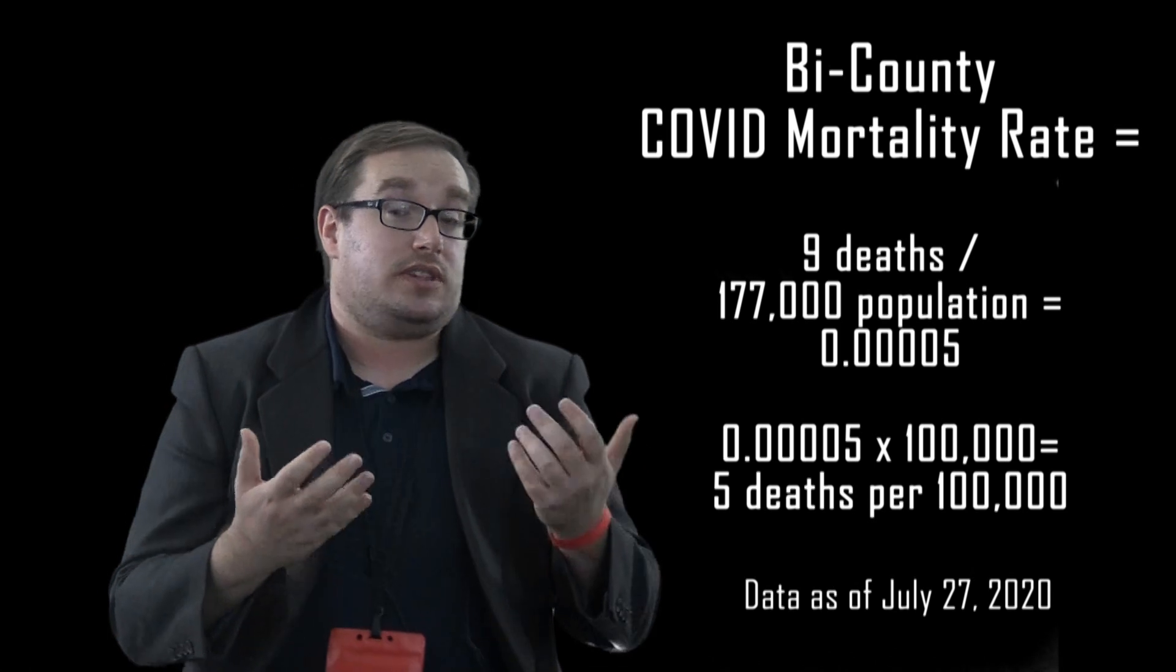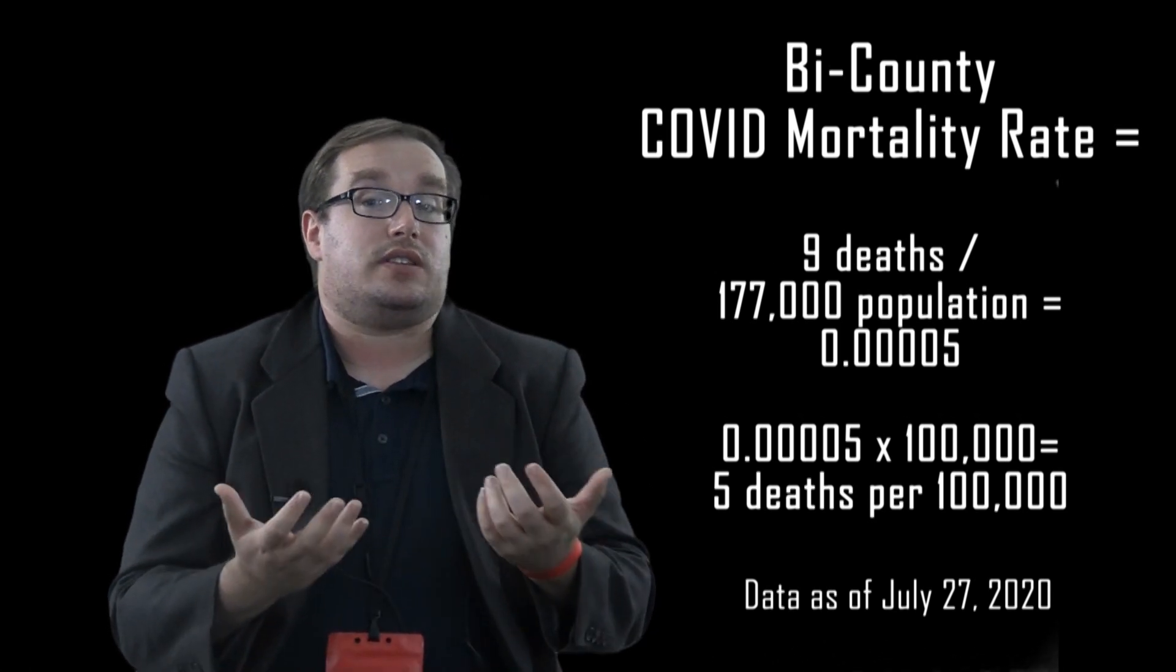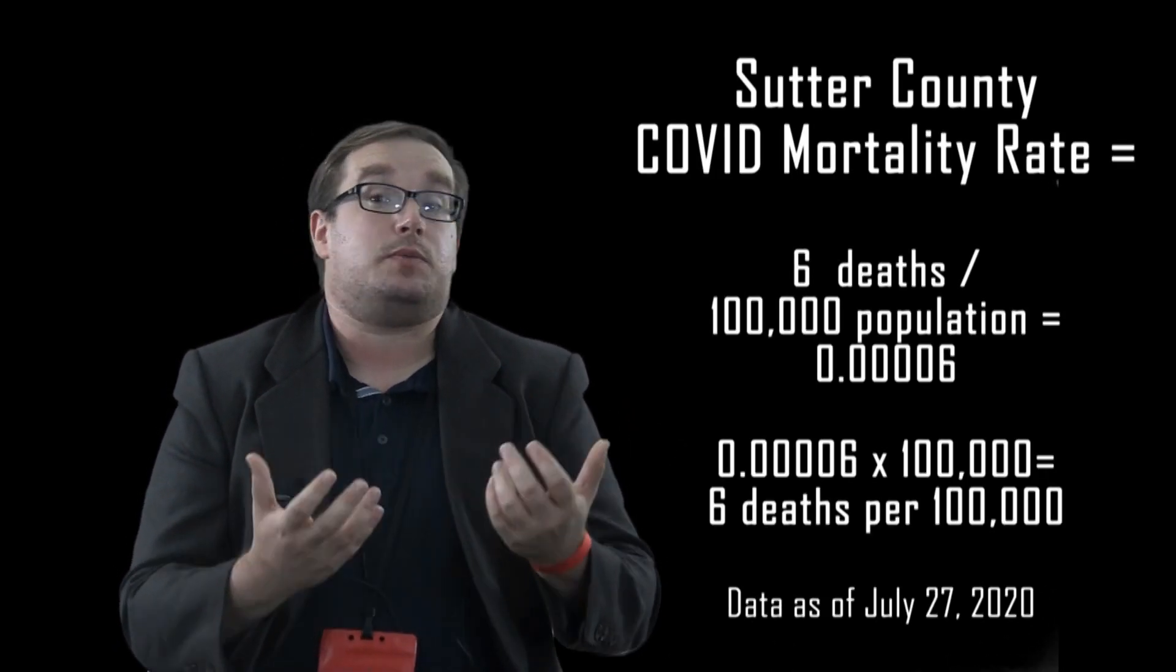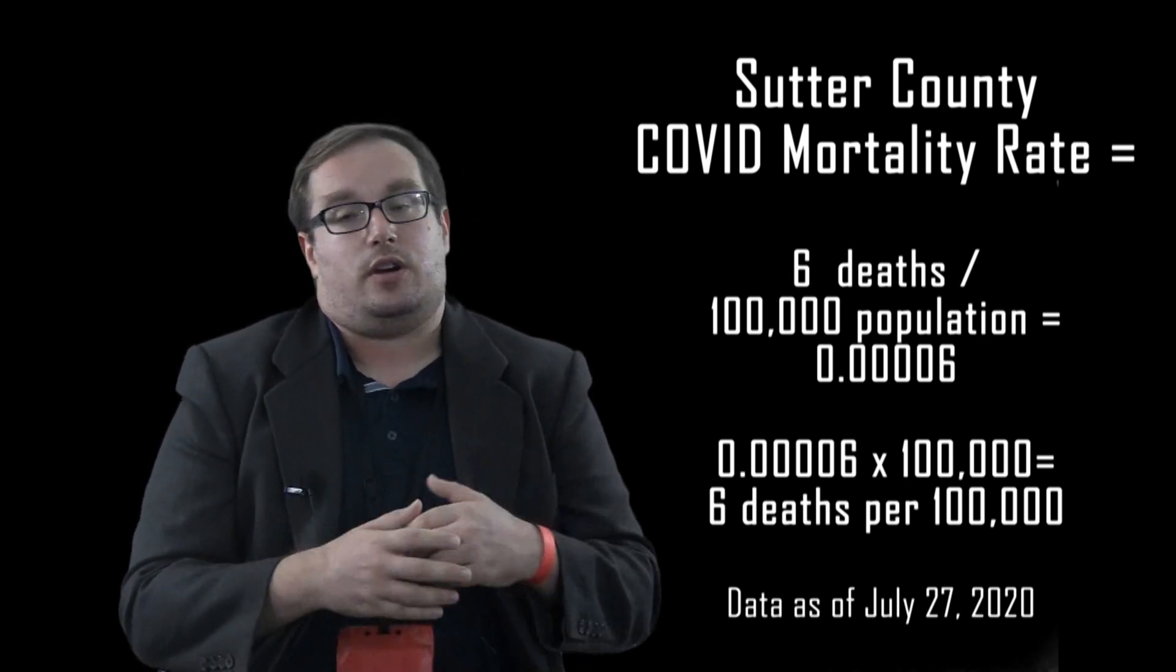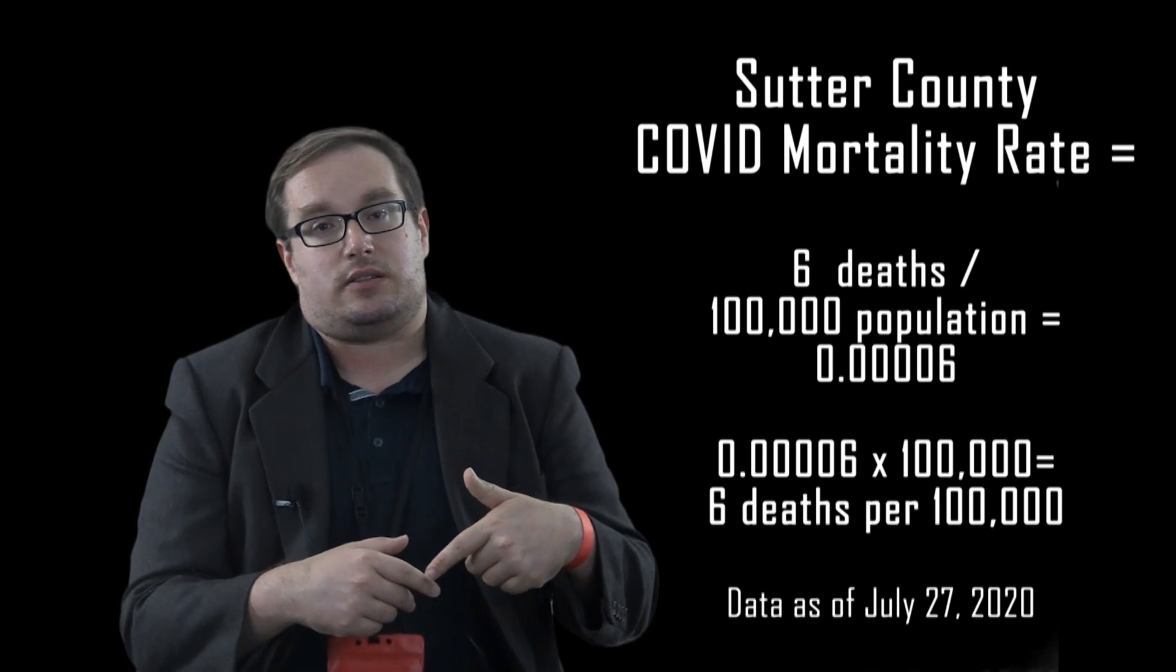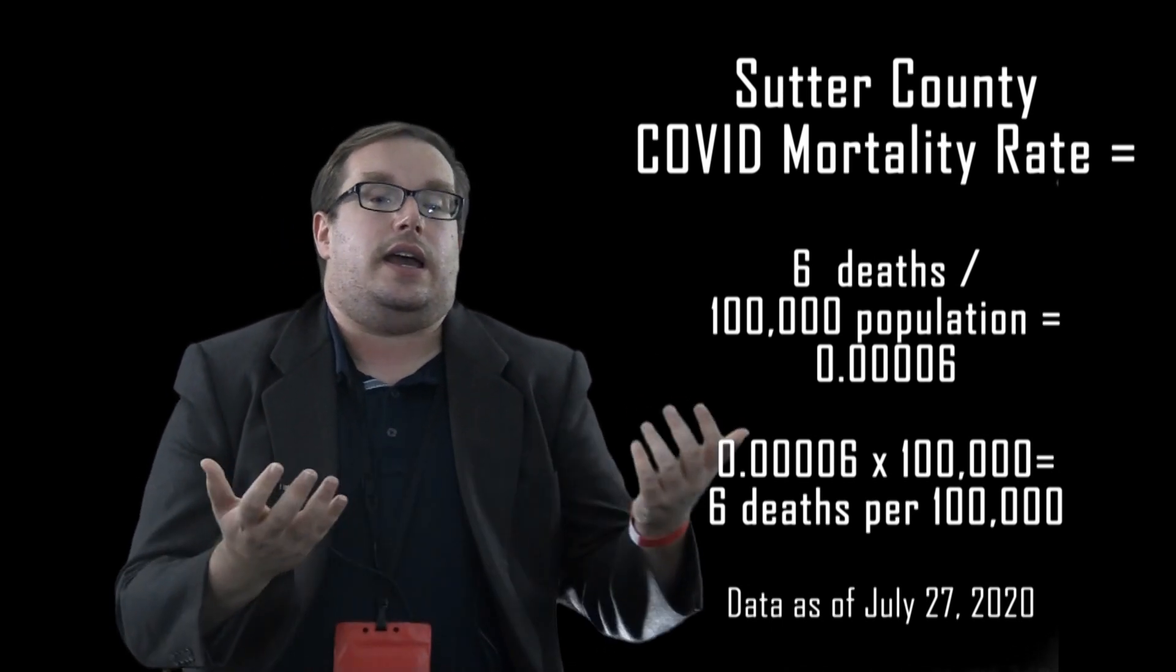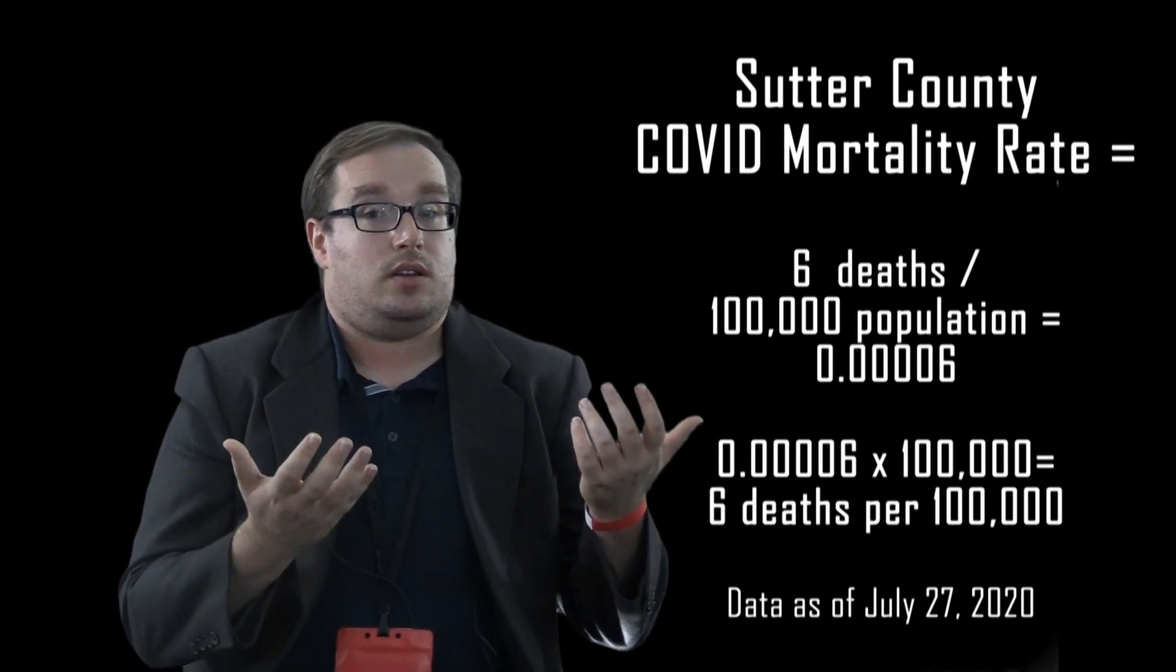Okay, what about Sutter and Yuba County? On the Sutter County side it's easy. There were six people have died and there's approximately a hundred thousand of us, so six divided by a hundred thousand times a hundred thousand, and we've got six people per hundred thousand people die of coronavirus this year.